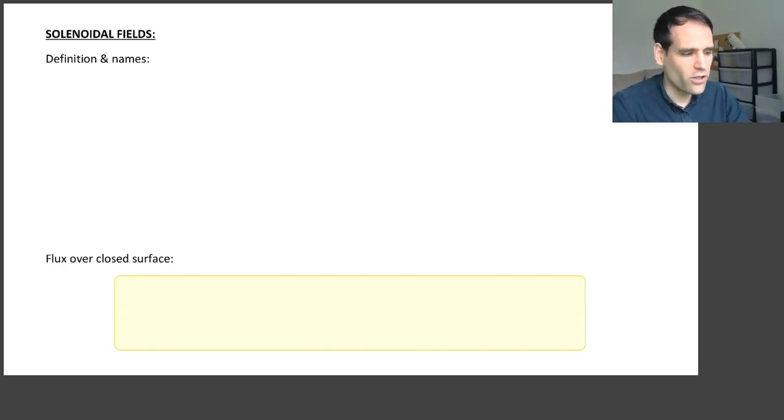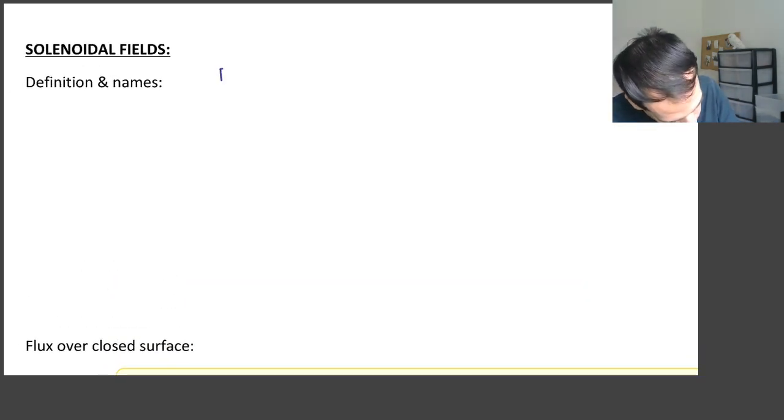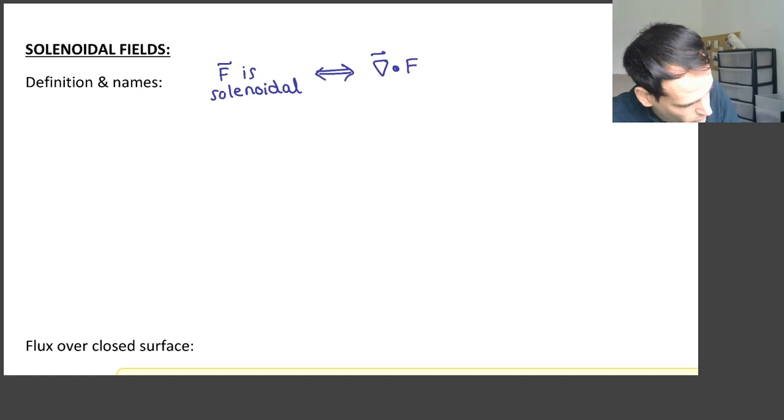Let's now look at solenoidal fields. So let me write the definition of solenoidal fields. A field F is solenoidal. This means that the divergence of F is equal to zero.